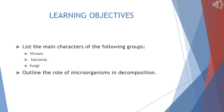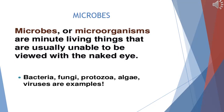By the end of this video, you should be able to list the main characteristics of viruses, bacteria, and fungi, and outline the role of microorganisms in decomposition. Microorganisms or microbes are minute living things that are usually unable to be viewed with the naked eye. We can only see them with the help of either a hand lens, a compound or light microscope, or an electron microscope.